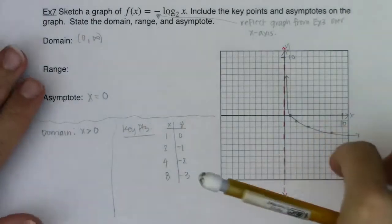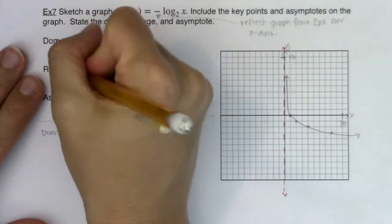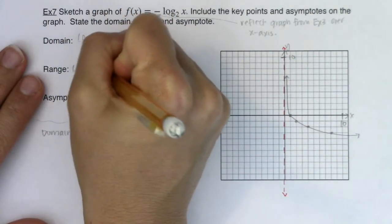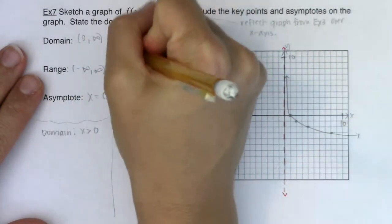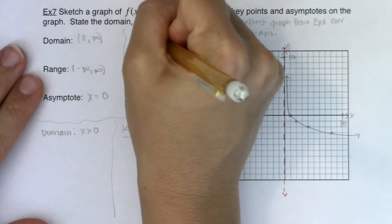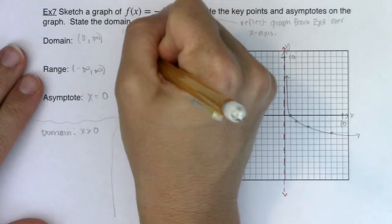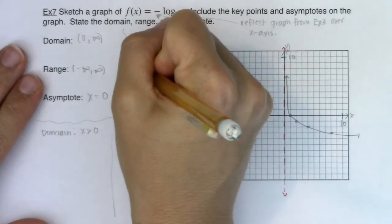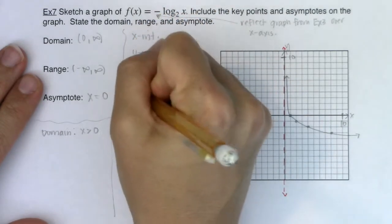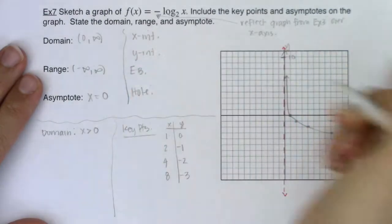Okay. My range is still down forever to up forever. So I'm going negative infinity to infinity. And just to finish all those other traits out let's see what we got. Our x-intercept, our y-intercept, our end-behavior, and holes. All right.